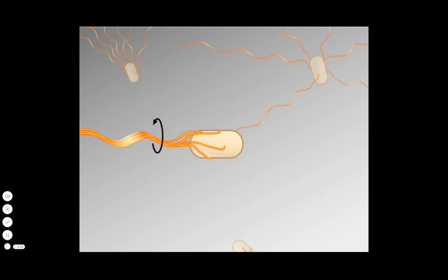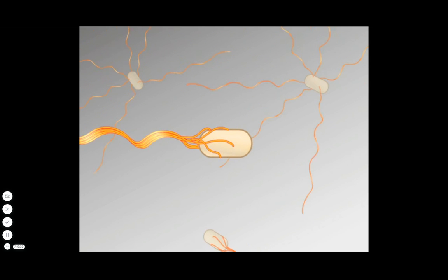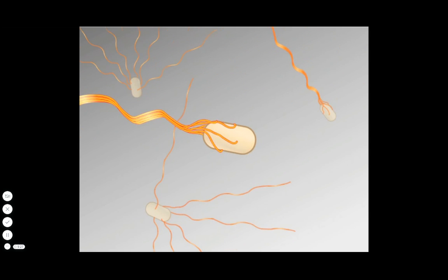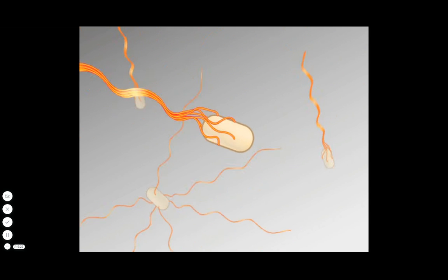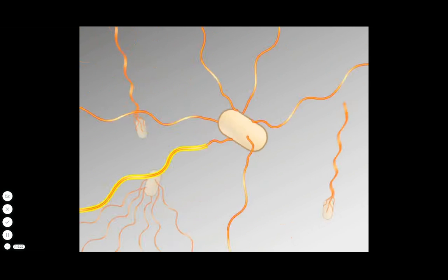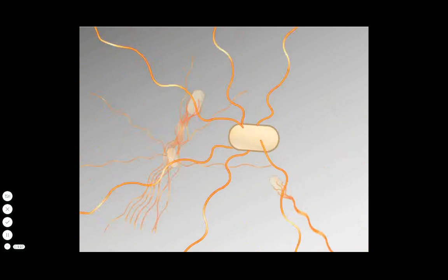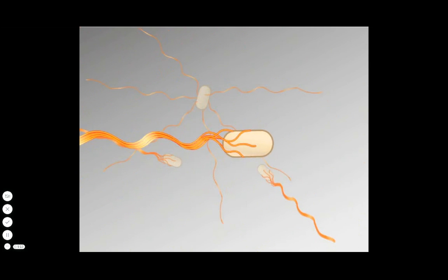Periodically, one or more flagella reverse their rotation to clockwise, disrupting the entire bundle and causing the cell to tumble. The cell ends up pointed in a random direction. Soon, all of the flagella again rotate in the counterclockwise direction and the cell swims forward.